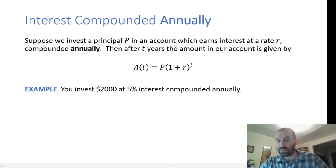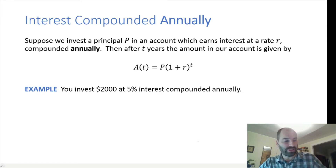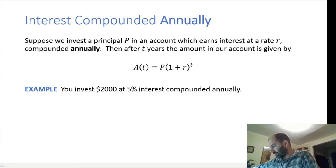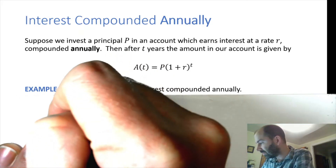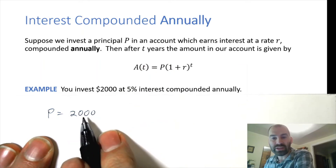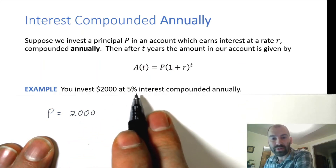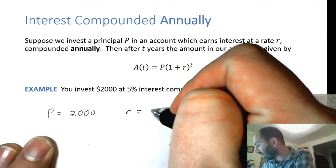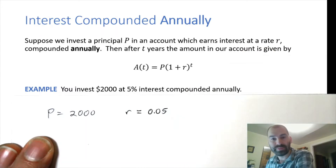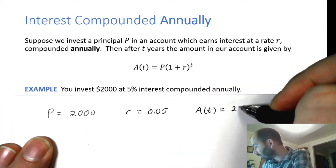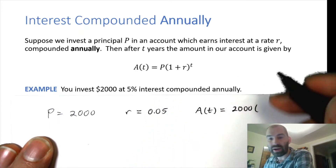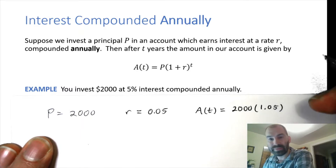Let's look at this example: we invest $2,000 at 5% interest compounded annually. Our principal is $2,000. The interest rate R comes from 5%, but remember R is always represented as a decimal, so R = 0.05. The expression giving the amount in our account is 2,000 times (1 + 0.05), or 1.05, raised to the power T.